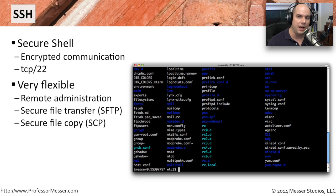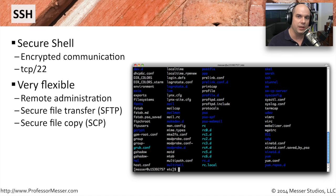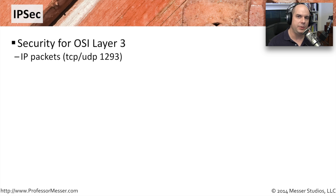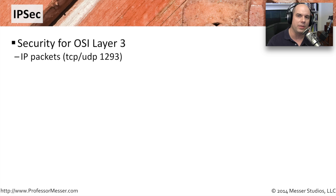With SSH we can do SFTP for secure file transfer, and SCP — secure file copy — to send information back and forth. When we need access to a computer but aren't going through a web browser, not using HTTP or SSL/TLS, we can use Secure Shell to make sure all communication is absolutely encrypted. SSH provides other types of encryption beyond what HTTPS offers.